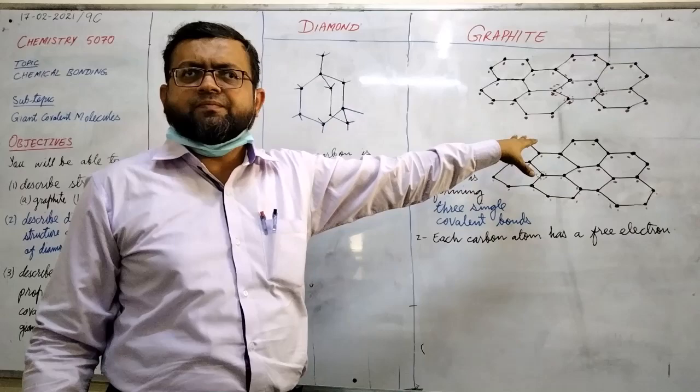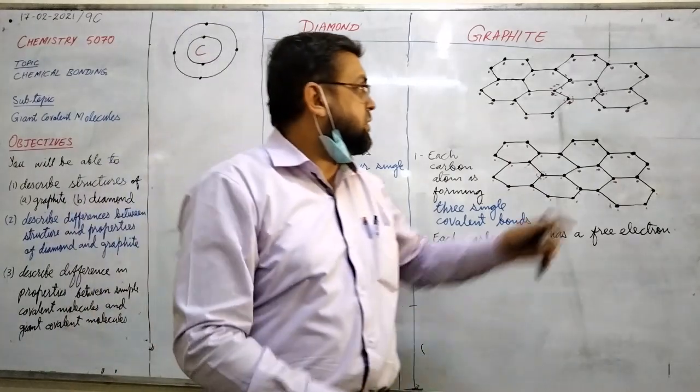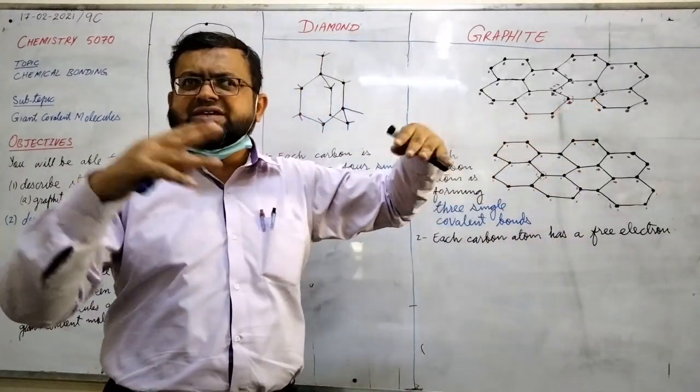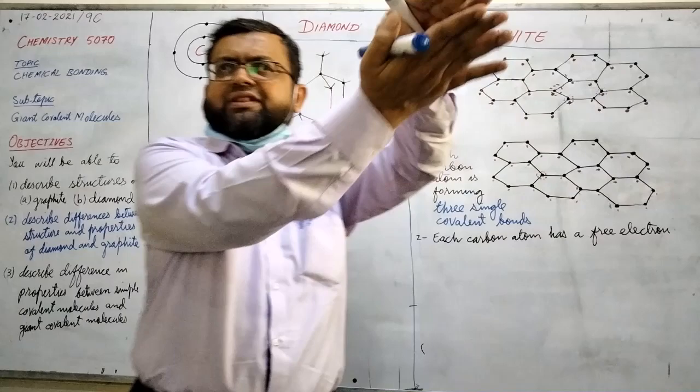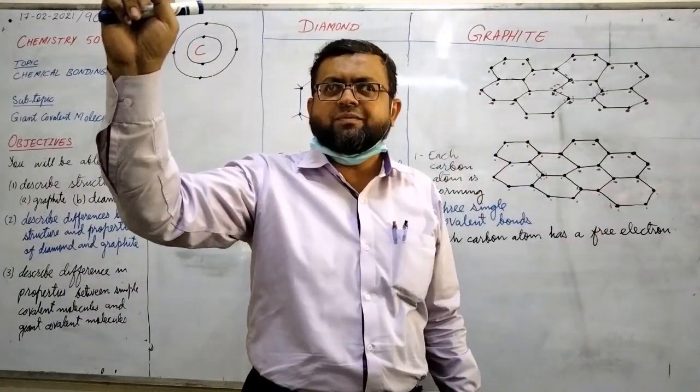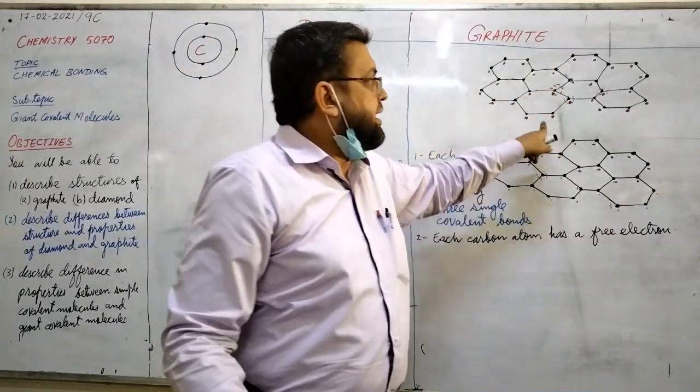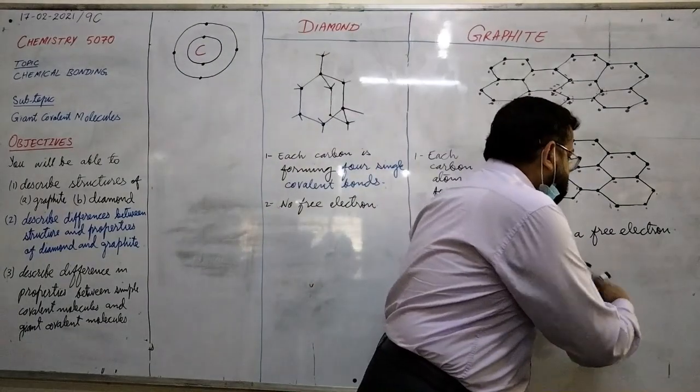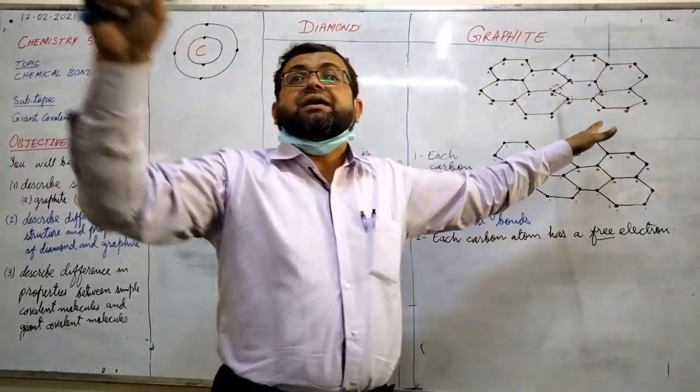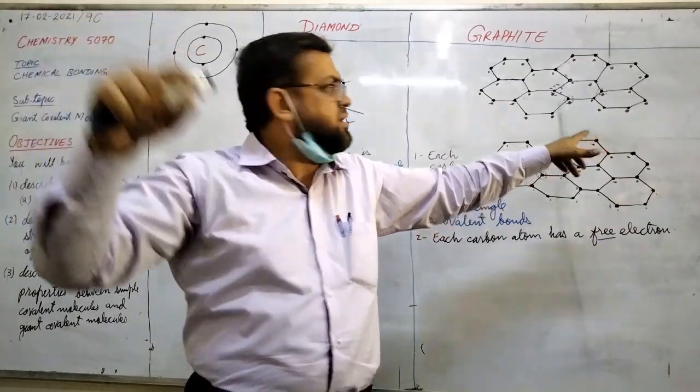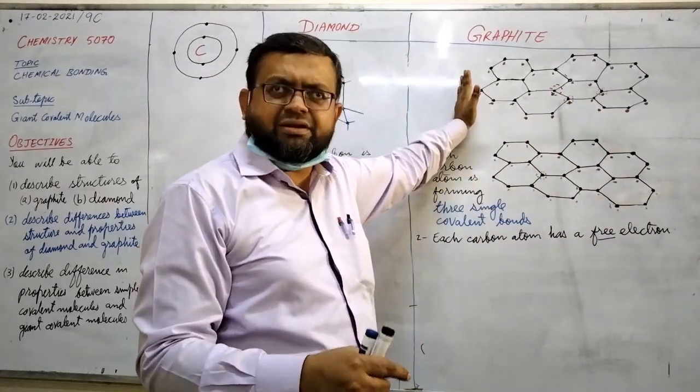Each carbon atom is having free electrons. So where do they go? They don't go anywhere, they remain there. And there is an attraction between the layers, but definitely between the layers there is no covalent bond. If there is no covalent bond, it means there are weak forces of attraction. And what word I have used is free electron. Free means it can go anywhere in some conditions. It may move here and there randomly.